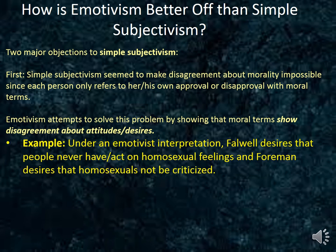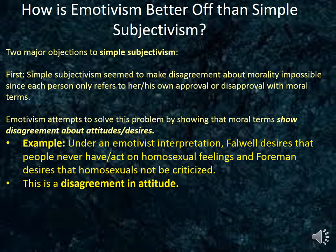So under an emotivist interpretation, Falwell desires that people never have or act on homosexual feelings, and Foreman desires that homosexuals not be criticized and that they be free to act on their feelings. What is important here has nothing to do with the debate over homosexuality. The important point about emotivism is that it seems to preserve a real form of disagreement — even though it is about attitudes and desires and not facts — and therefore the first objection against simple subjectivism simply does not apply to it.